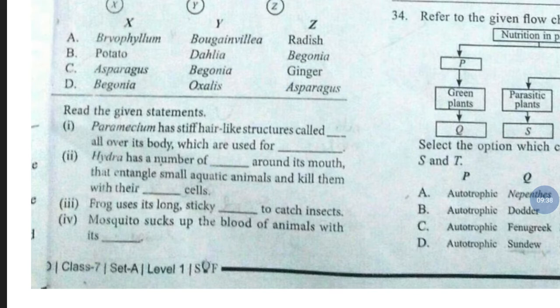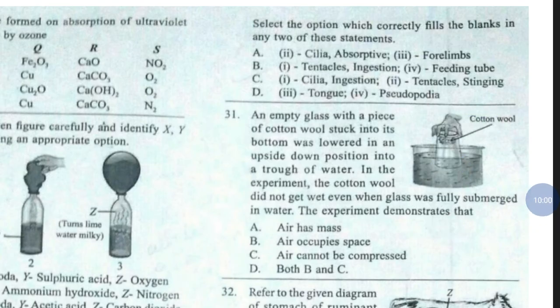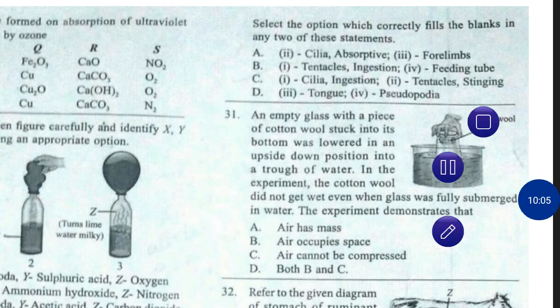Question number 30. Read the given statements. First, paramecium has stiff hair-like structures called blanks all over its body which are used for blank. Second, hydra has a number of blanks around its mouth that entangle small aquatic animals and kill them with their blank cells. Third, frog uses its long sticky blank to catch insects. Fourth, mosquito sucks up the blood of animals with its blank. Select the option which correctly fills the blanks in any two of these statements. The correct answer is option number C — first: cilia, ingestion; second: tentacles and stinging.